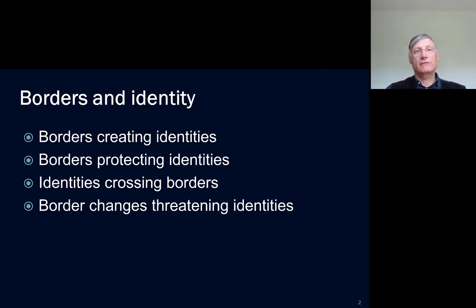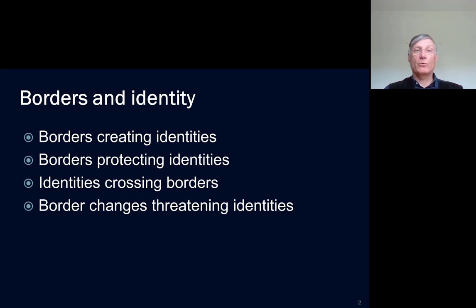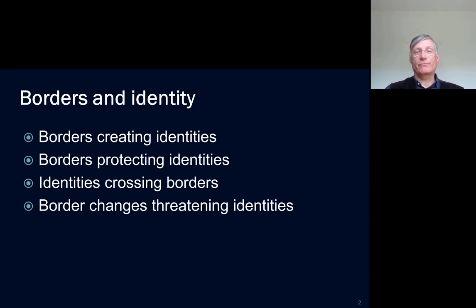I'll discuss in this lecture four different ways in which borders and identities are linked. First, I'll discuss how identities are formed within borders. Then I'll discuss how existing identities use borders to protect themselves. Thirdly, I'll discuss how in cross-border regions identities are formed which are sometimes crossing the borders but are sometimes very much opposed to each other. And lastly, I'll discuss how border changes affect how identities are used.